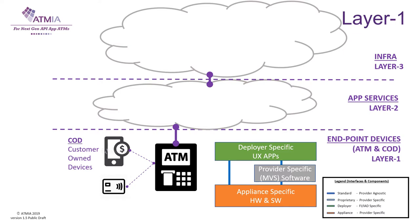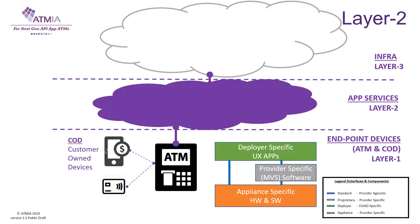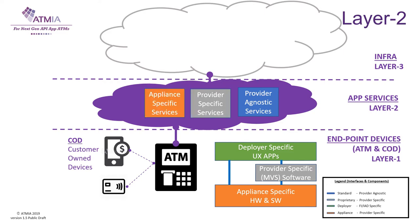The App Service Layer 2 is designed to leverage on cloud based technologies, using app and open API models. There is a level playing field of provider agnostic app services in blue, like test and certification services, provider specific app services in grey, and appliance specific services in orange.